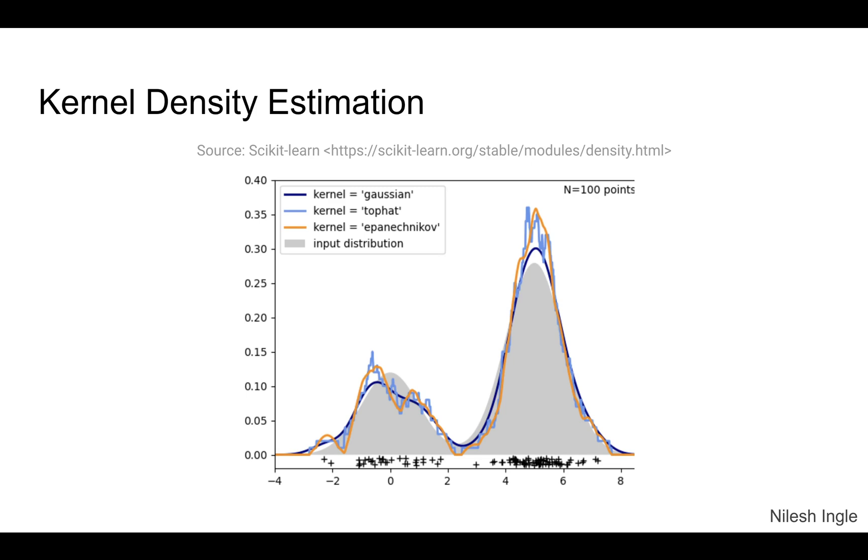This is an overlay of three plots: the Gaussian density in dark blue, the tophat in light blue, and the Epanechnikov in orange. The plus signs below the plot indicate the location where the data points fall on the x-axis.